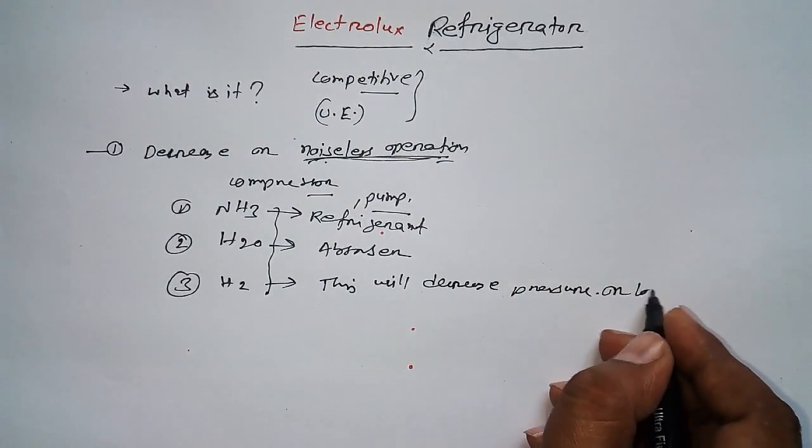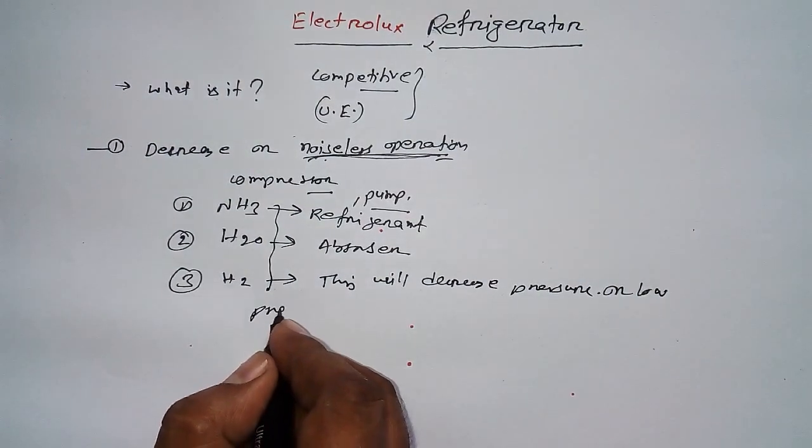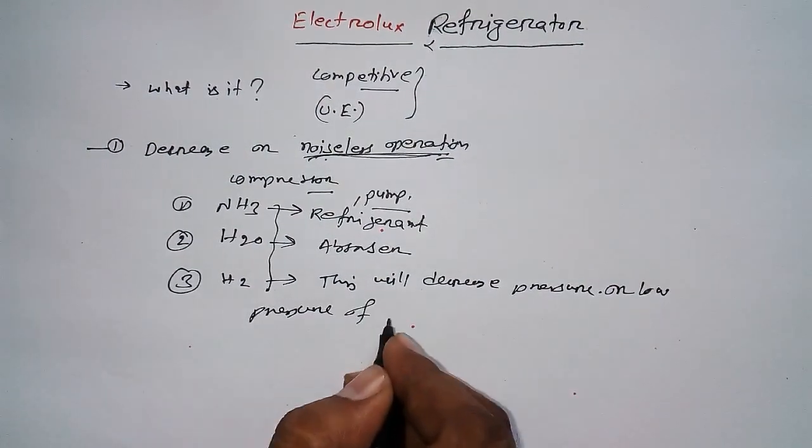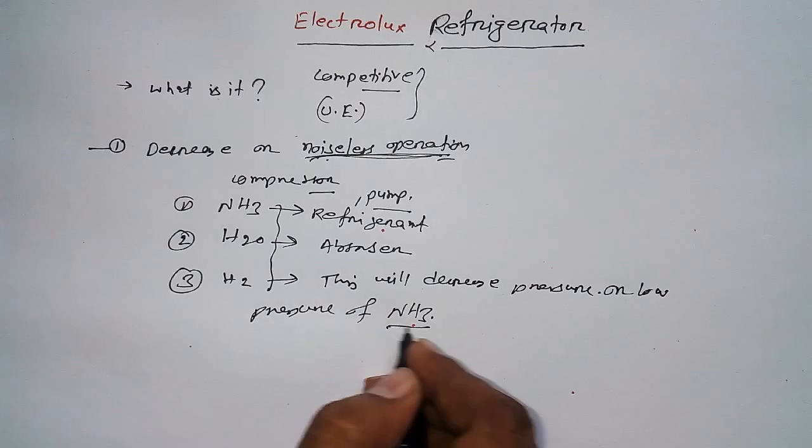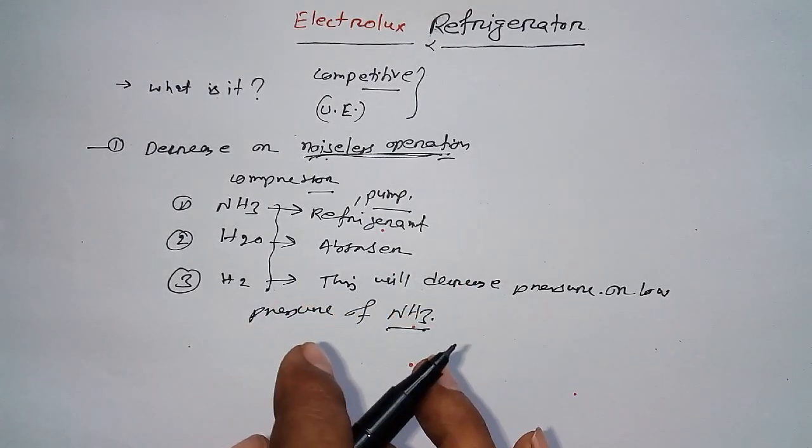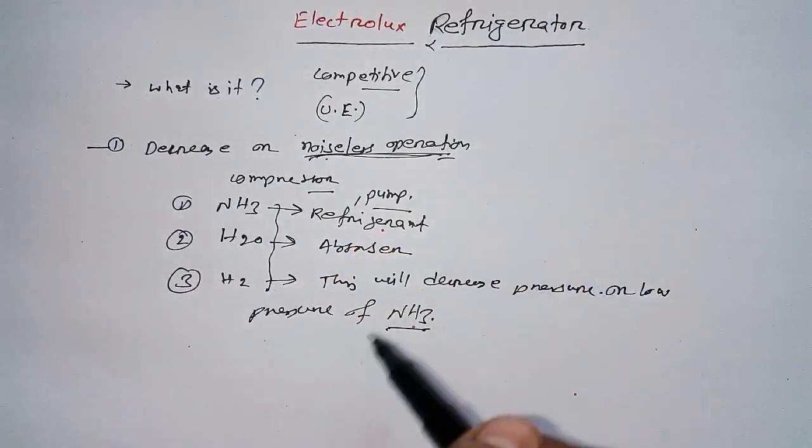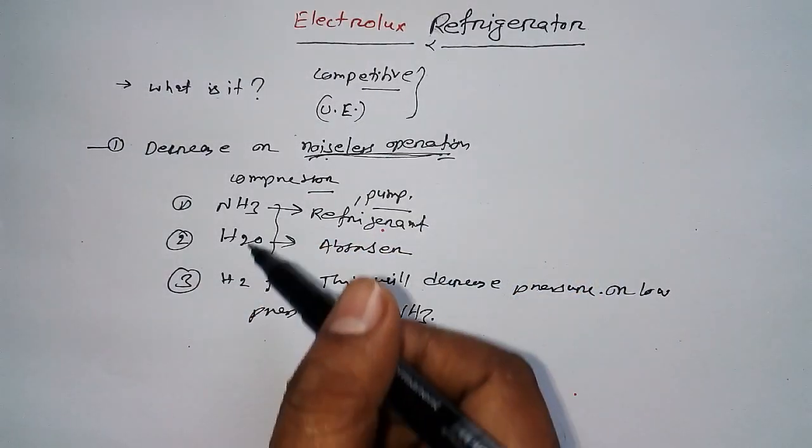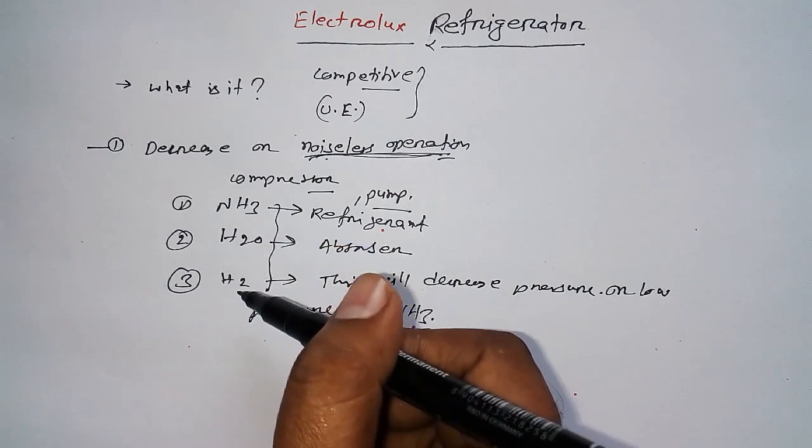Low pressure of NH3 ammonia. So basically what you have to remember - three things: What is Electrolux refrigerator? Noiseless. How many fluid systems are we using? Three. And what are their importance?